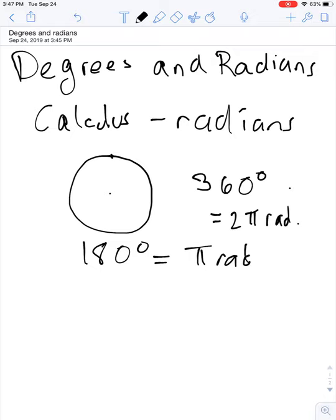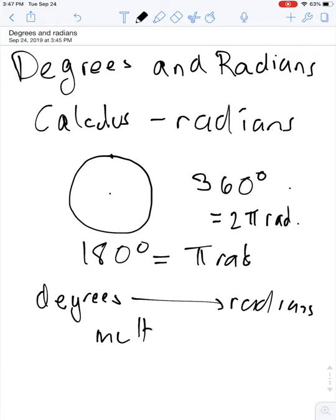That means that if we start in degrees, we can get to radians by multiplying by π divided by 180.